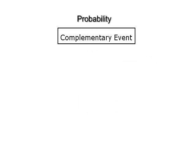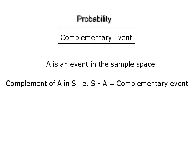Complementary event. Let A be an event in a sample space S. Then the complement of the event A, denoted by A bar or A dash.